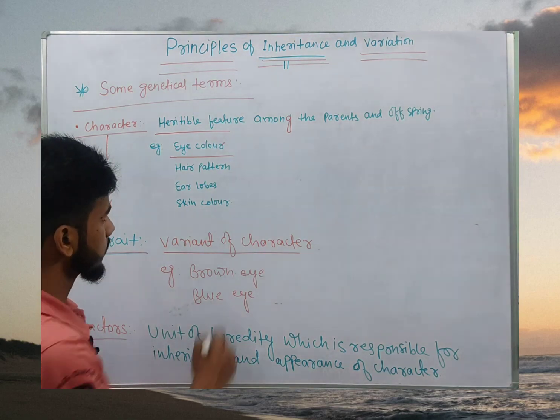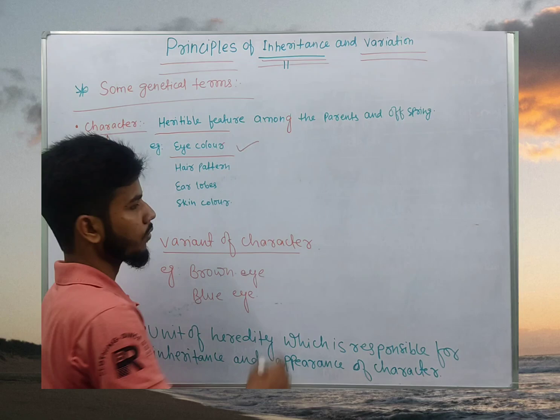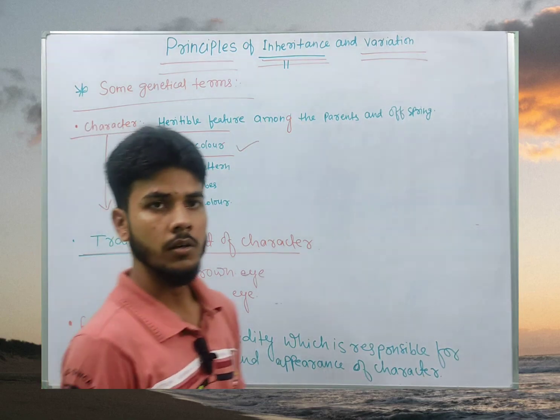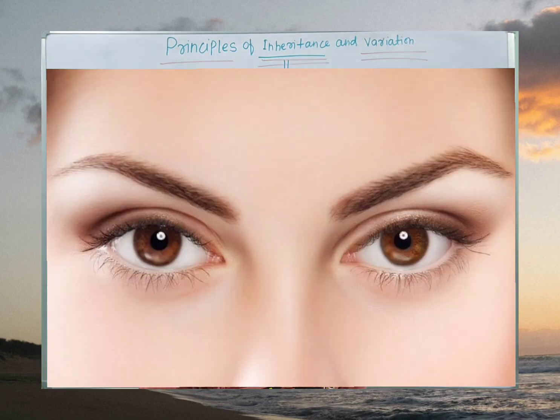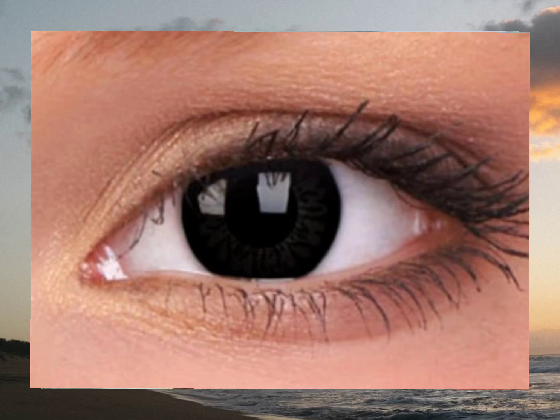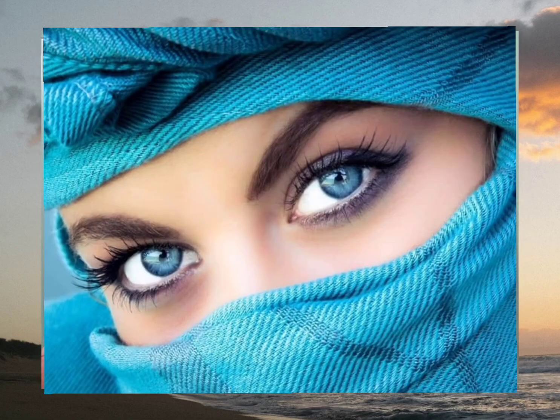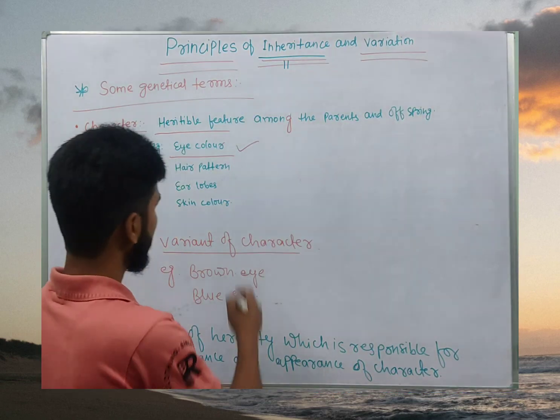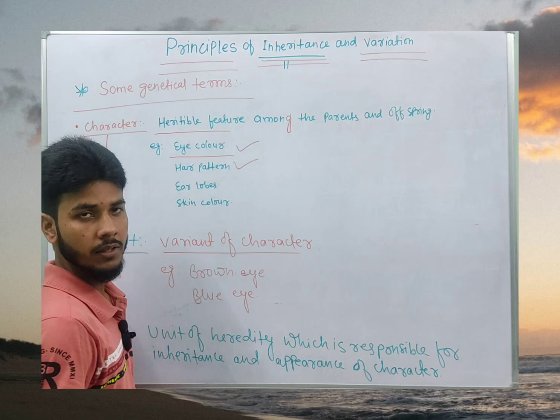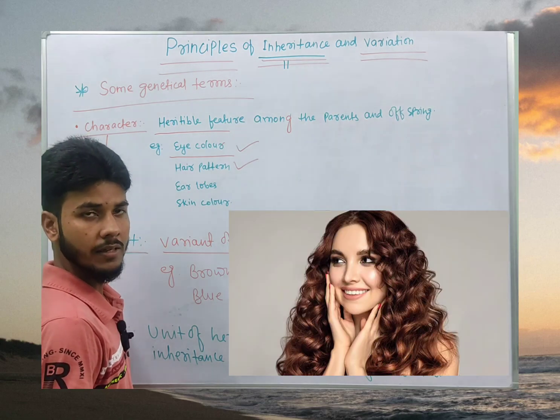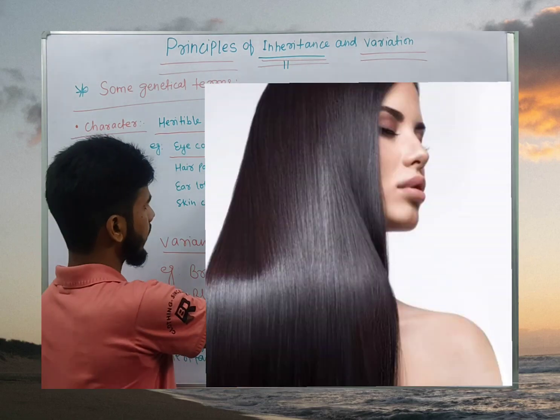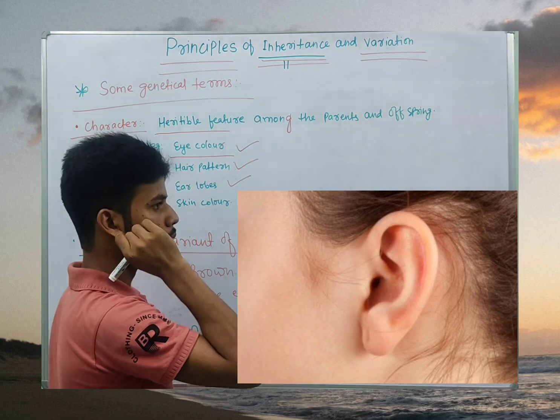First of all, we have an example of eye color as you have seen or you have heard about brown color, black color, or blue color eyes. In next we have hair pattern, it may be curly, it may be silky or smooth. In next we have earlobe, furry earlobe or attached earlobe, skin color, mother pigmented color, dark brown color, or it may be light brown or it may be complete white color, that is albinism.